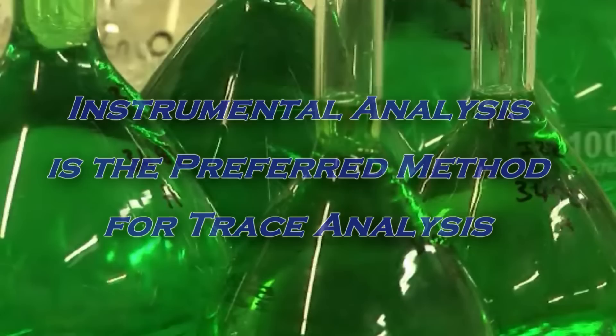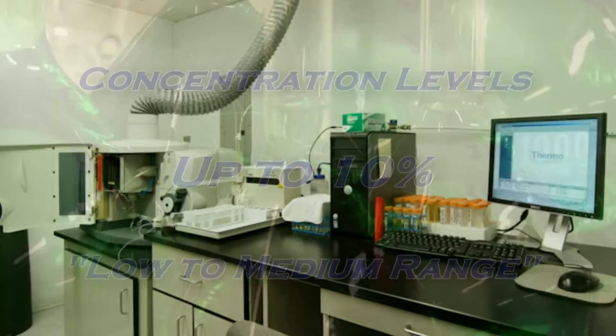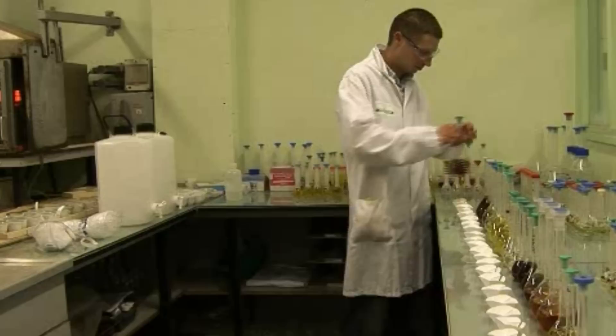The low to medium range, defined as up to 10% precious metal content, often uses instrumental analysis since results are often obtained faster. In the high range of 10% to 100%, chemical methods of analysis have superior precision over instrumental methods.